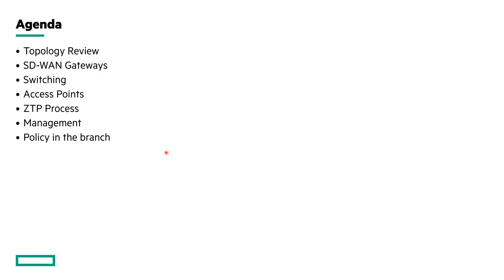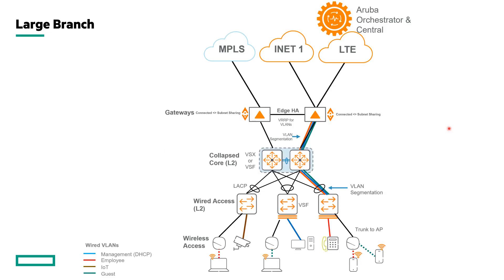Let's start by reviewing the agenda. In this video we're going to discuss the various topologies that we have at the branch — both a small and large topology — how the SD-WAN gateways fit into the topology, and the design considerations around those. We'll then look at the switching infrastructure and discuss collapsed core and access switching designs, the AOS 10 AP design, the zero-touch provisioning process, and finally, how to segment traffic with policy at the branch.